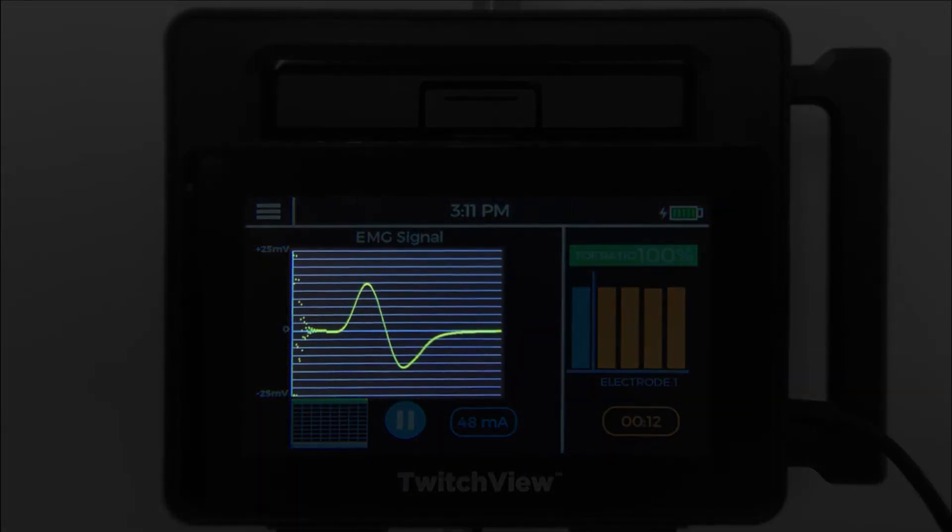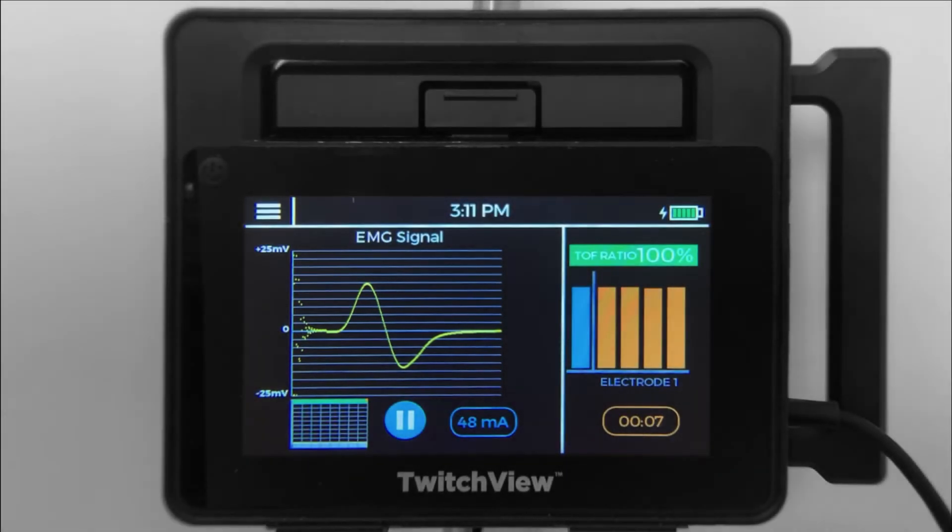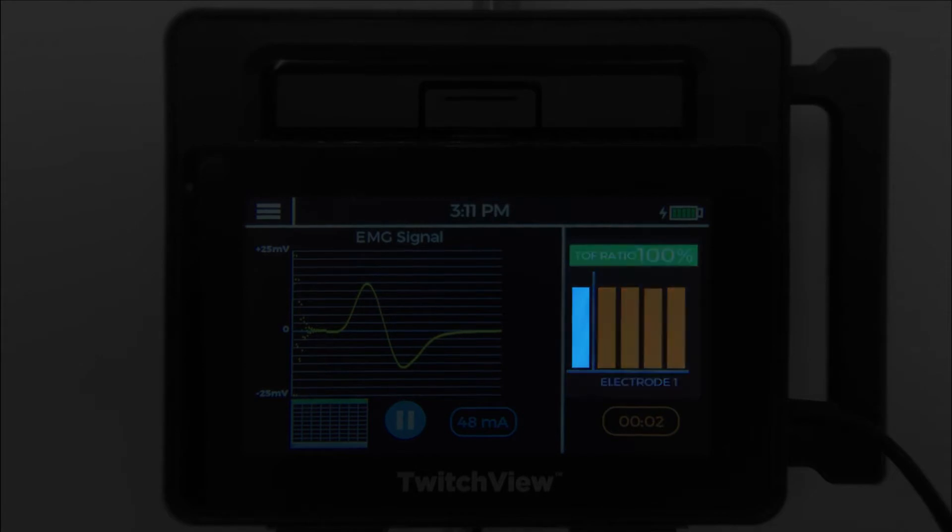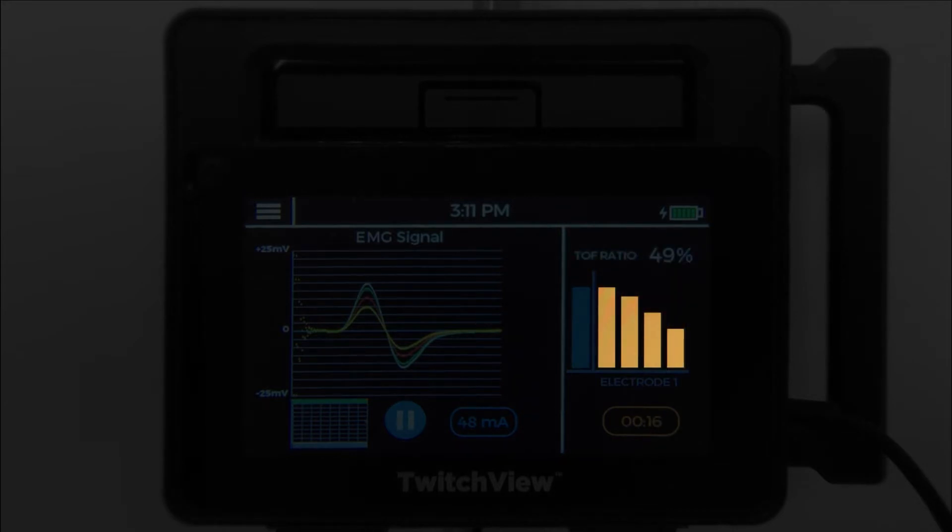On the left side of the screen, you will see the raw EMG waveform. On the right side of the screen, you will see the most recent TRAIN-4 measurement. The blue bar represents the patient's pre-paralytic measurement and the orange bars represent real-time measurements or twitches.